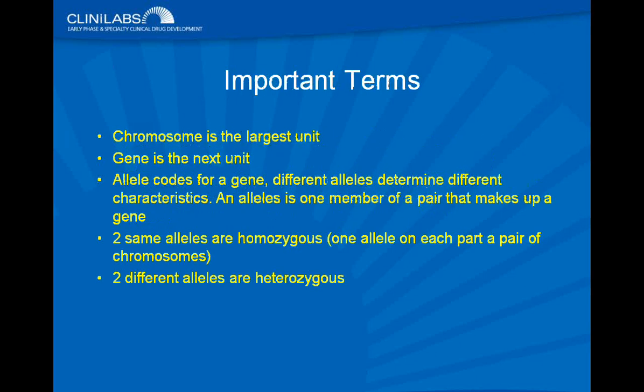The chromosome is the largest unit; the gene is the next unit. Alleles code for a gene, and different alleles determine different characteristics. An allele is one member of a pair that makes up a gene. Two of the same alleles are homozygous — one allele on each chromosome of a pair. Two different alleles are heterozygous. You get one allele from mom and one allele from dad.